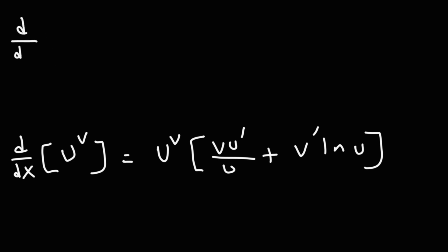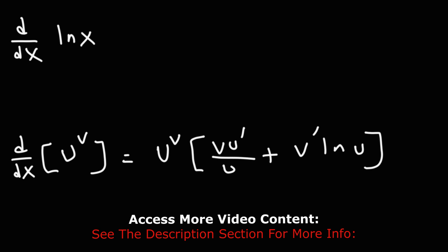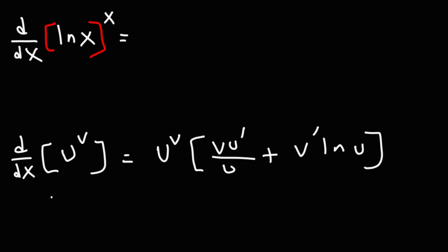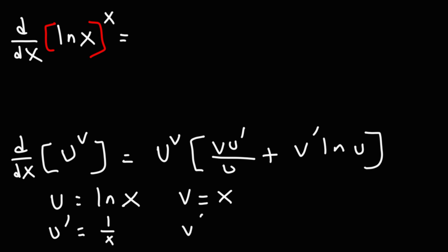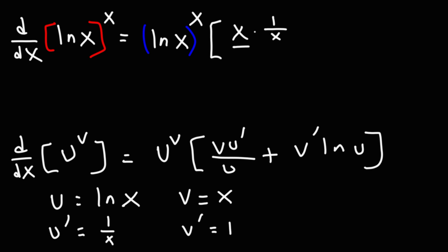Feel free to try this problem: find the derivative of ln x raised to the x. So in this case u is going to be ln x, v is x. u prime — the derivative of ln x — is 1 over x. v prime is going to be 1. So u raised to the v is ln x raised to the x — the original problem — then v times u prime: v is x, u prime is 1 over x, divided by u, which is ln x, plus v prime, which is 1, times ln u. u being ln x, so it's ln of ln x.